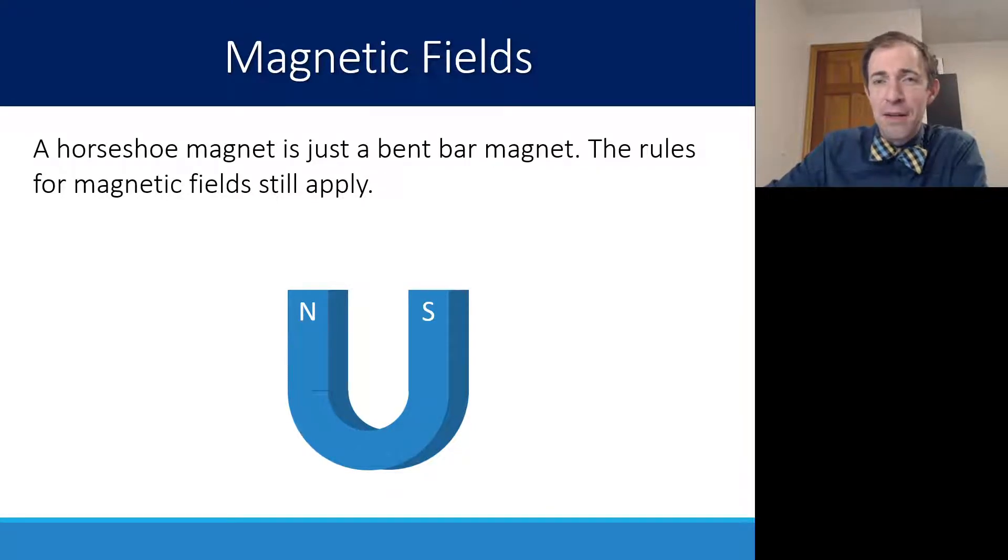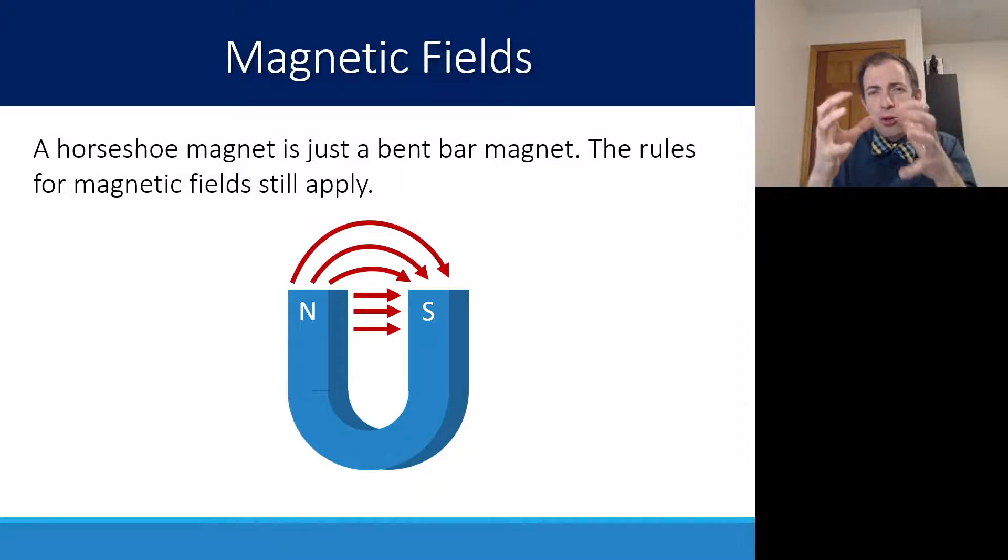We're still going to see a magnetic field form pointing from north to south. But here, we will see it more concentrated, because now you have a closer location that the north and south are right next to each other.